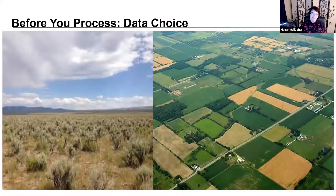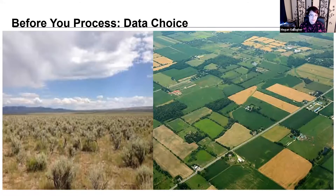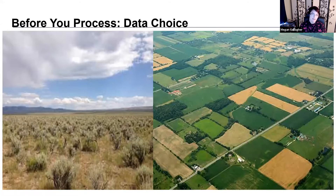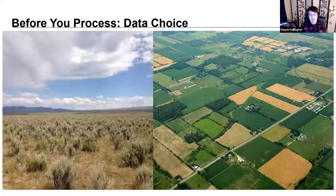Now let's get into hyperspectral processing. Before you process: data choice. I've made all the mistakes I'm about to list, so hopefully this will help you avoid the same ones. Before you process, consider the kind of data you need: what is the size of the feature you're looking for? Are you looking at an entire forest or a specific single type of vegetation? That determines what kind of sensor you need. What coverage do you need — the whole world or a small geological area of interest? And is it a one-time study or do you need repeated collects over an area to watch change over time?